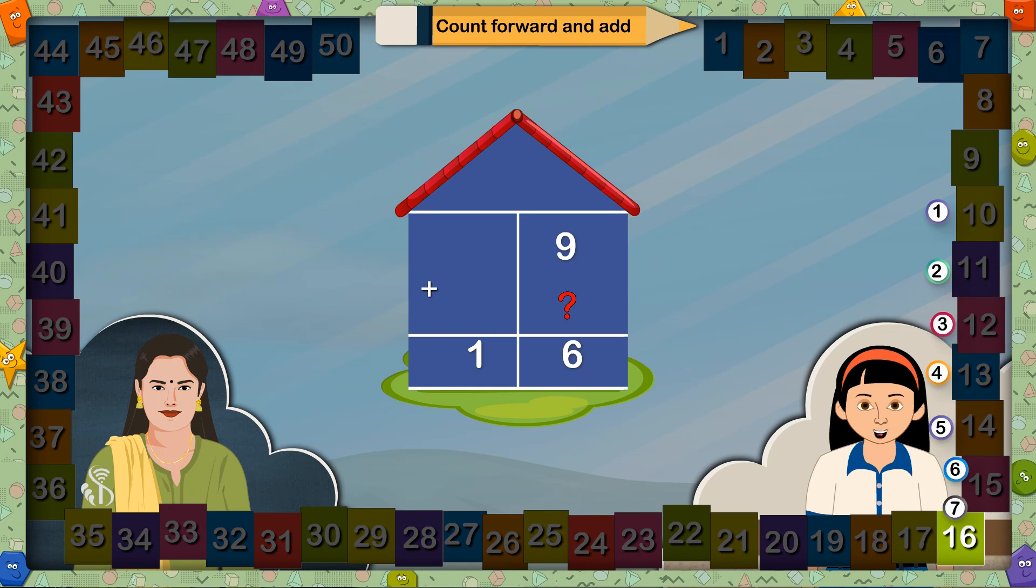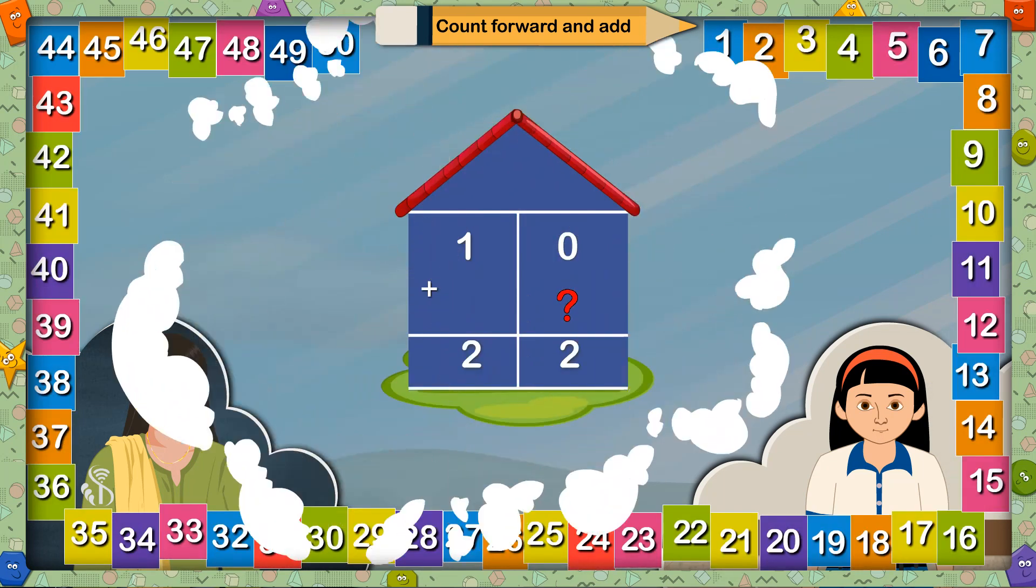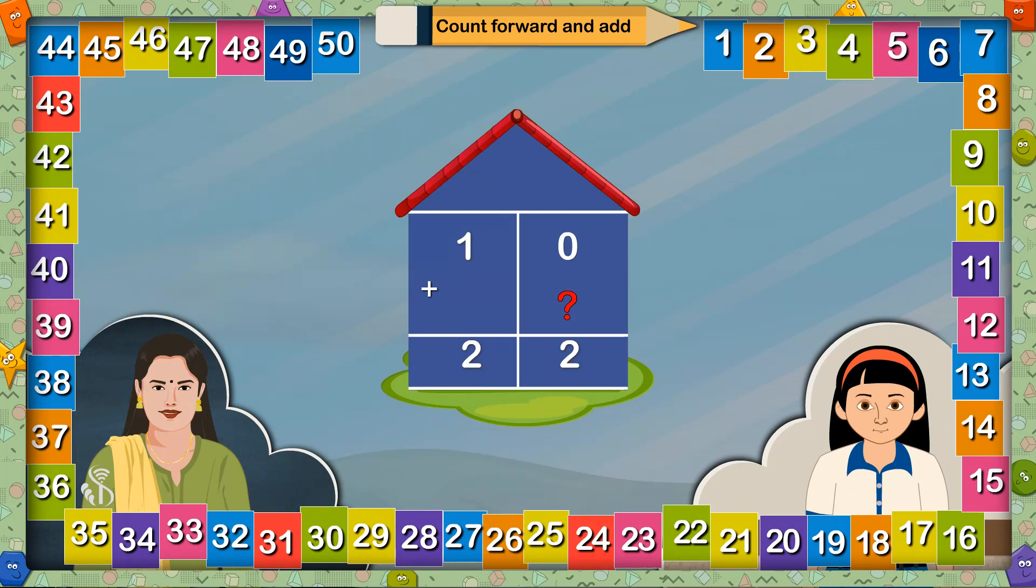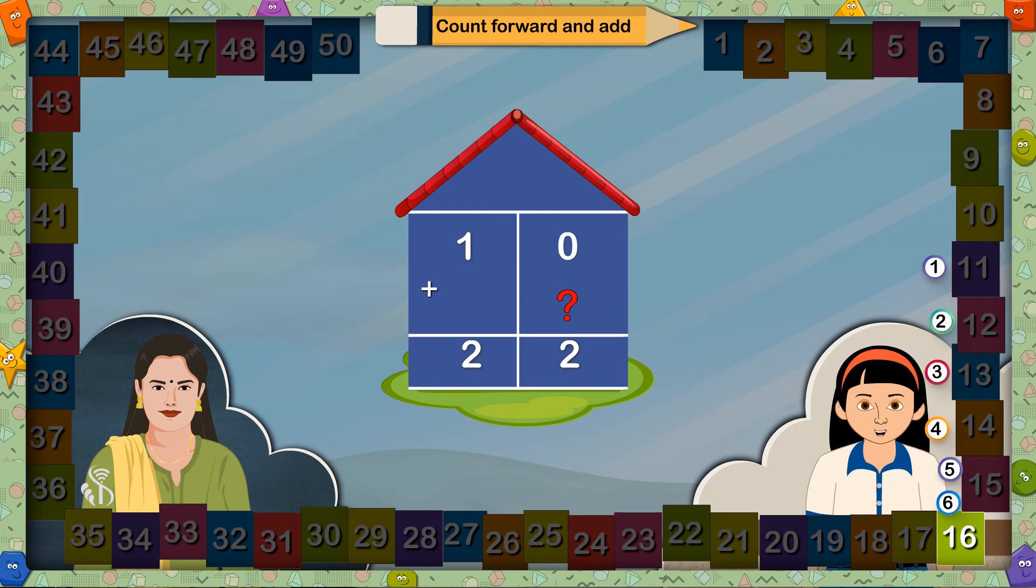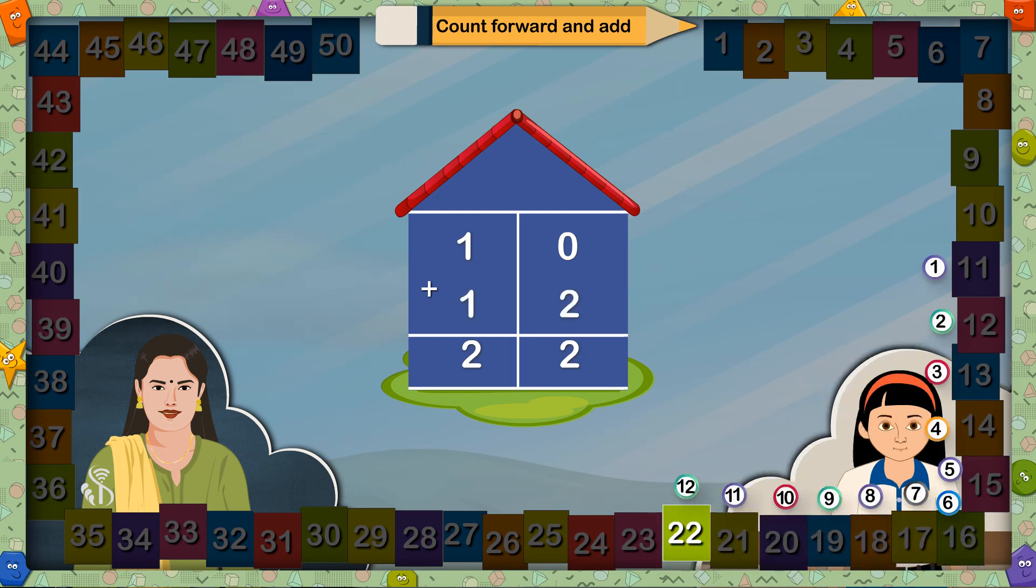Which number should be added to 10 so the answer will be 22? Madam, from 10 I counted 12 places to reach 22, so the number must be 12. That's right.